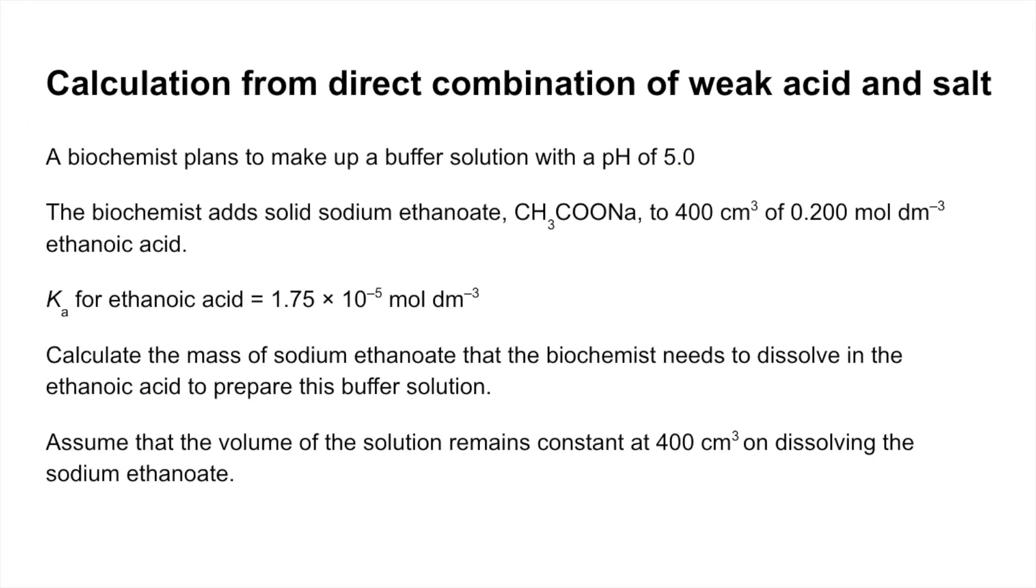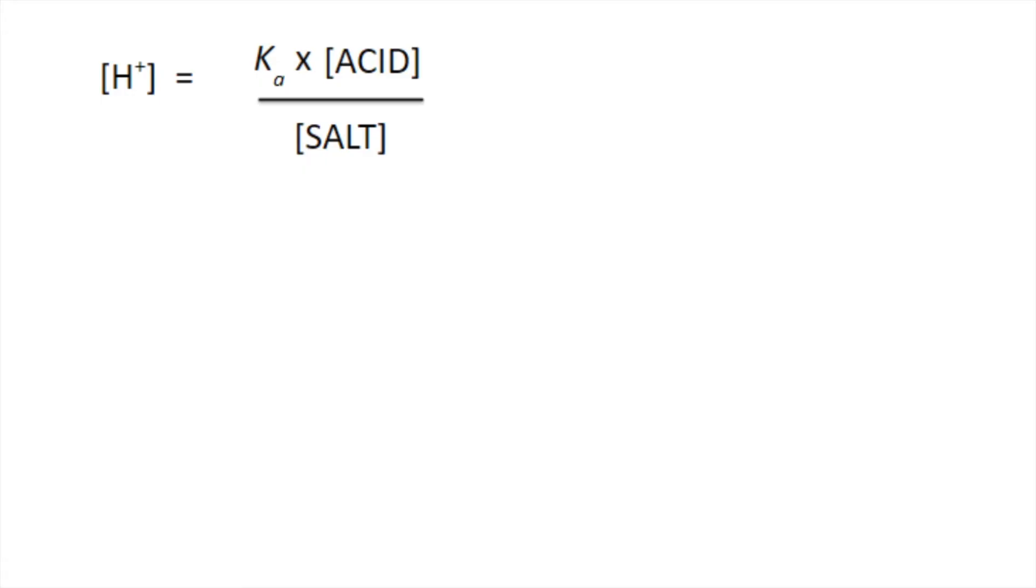Here's the second question. For this one I'm starting with the cacid over salt expression and we need to know the mass of the salt that needs to be dissolved. If we can get the concentration of the salt from this expression, we can turn that into moles and then get the mass. The rearranged expression for salt concentration looks like that, and then we'll put the numbers in.